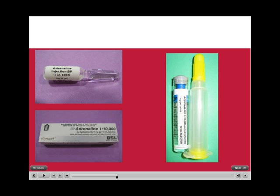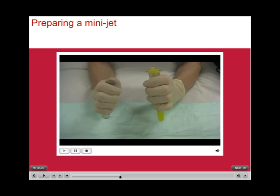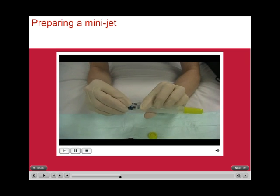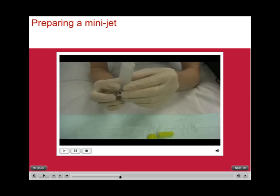Here are some pictures of different concentrations of adrenaline. In the ampoule on the top left, it is 1mg in 1000ml, while on the mini-jet to the right, which holds 10ml, it is actually 1mg in 10,000ml. This short video shows how you should prepare a mini-jet. It is actually quite easy, but like most things, it is easy when you know how.